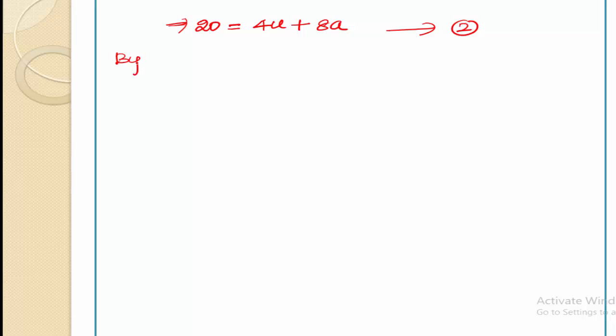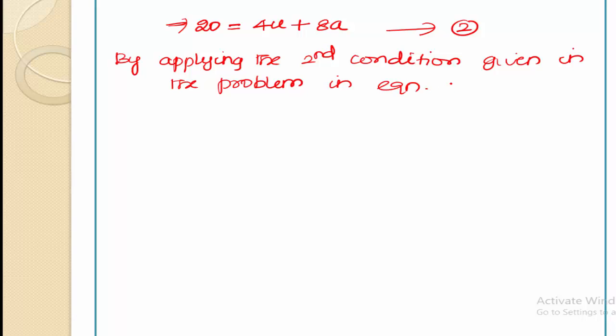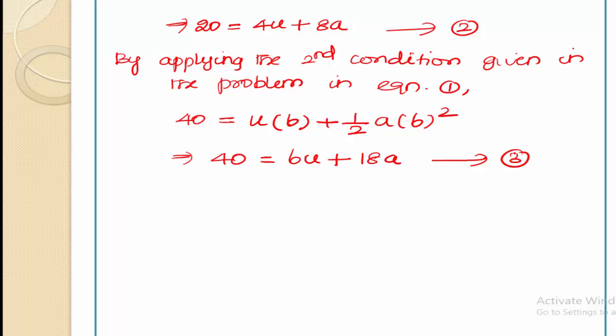By applying the second condition given in the problem in equation 1, for the second condition, the distance traveled is given as 40 meters equals u into time taken for crossing 40 meters, which is 6 seconds, plus half into a into 6 squared. So 40 is equal to 6u plus—6 squared is 36 divided by 2—18a. Name this as equation 3.